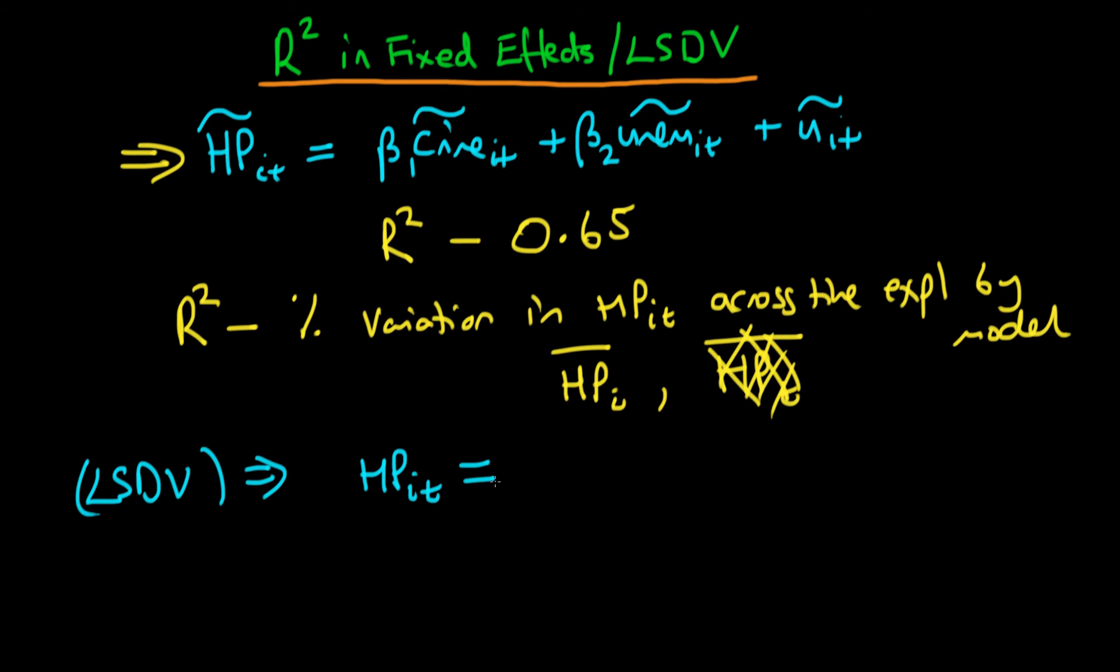We do pooled OLS on our ordinary regression which is house price in city i at time t is equal to beta1 times the crime rate in city i at time t plus beta2 times the unemployment rate in city i at time t.